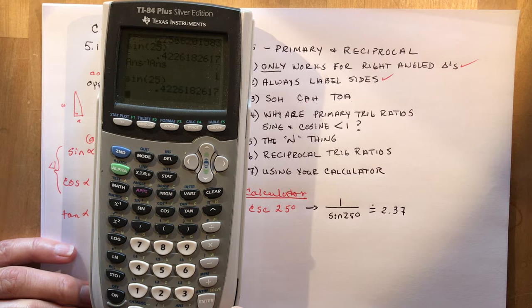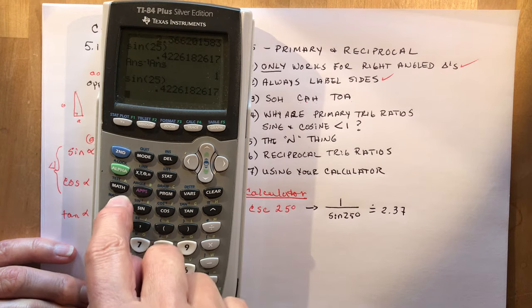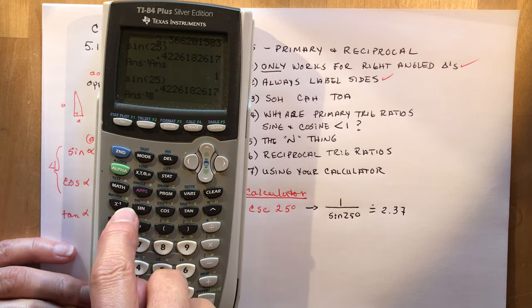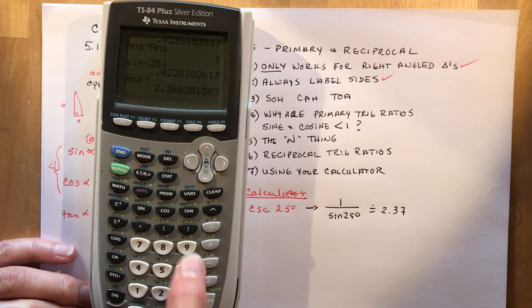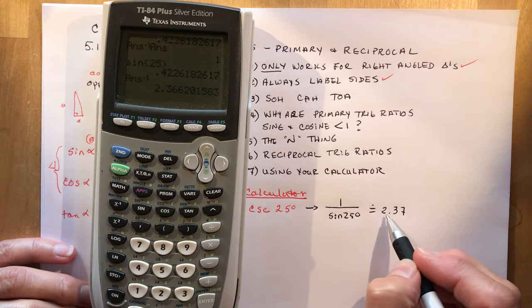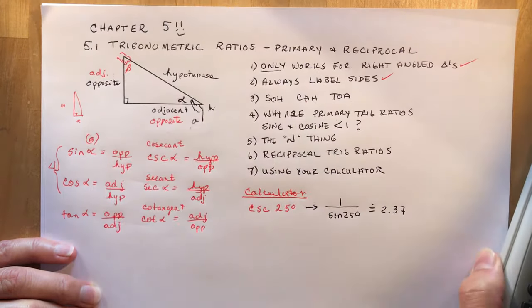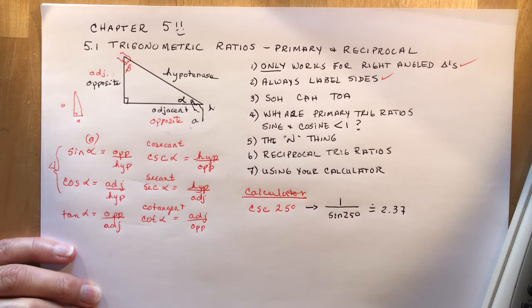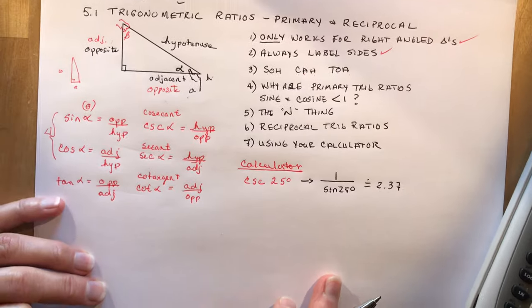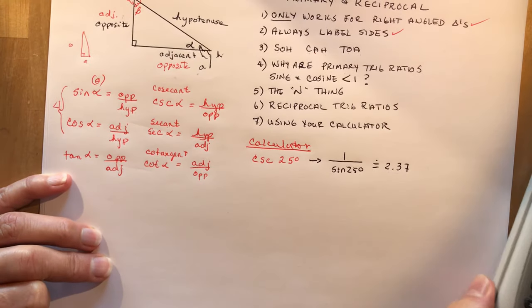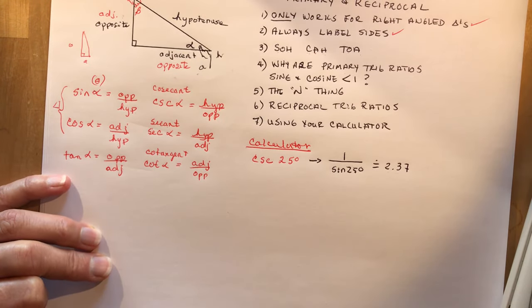Sine 25 degrees equals, now x to the negative 1 of your answer. It already did it, is 2.366. So that's the same thing we got here. So that's all you have to do. It's not difficult, it's just another thing to learn, right? Secant, cosecant.